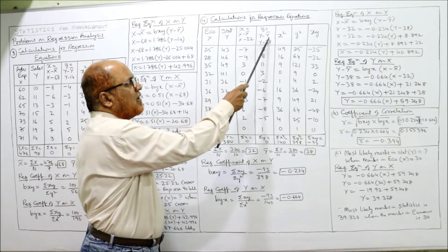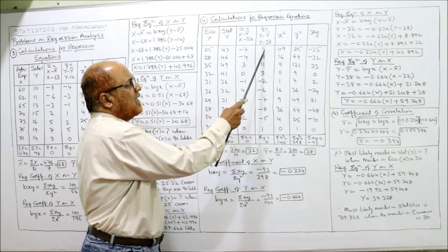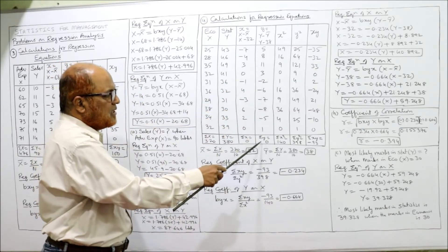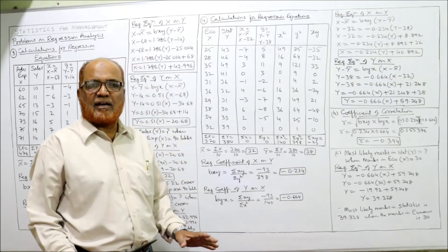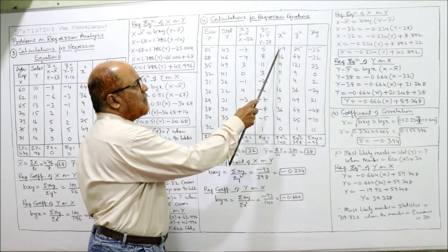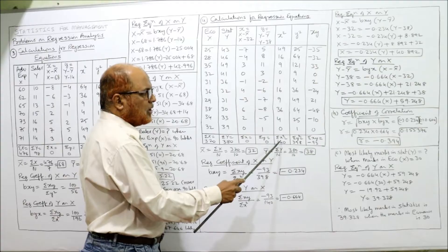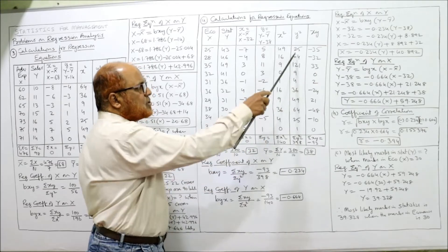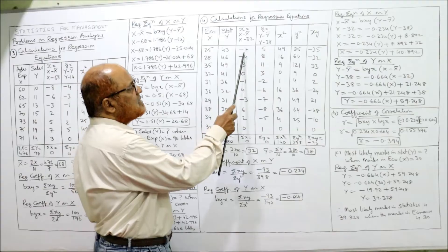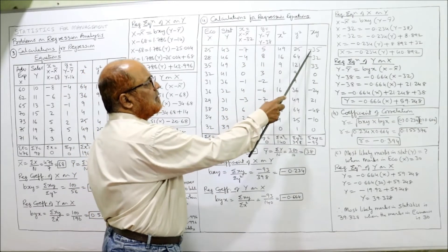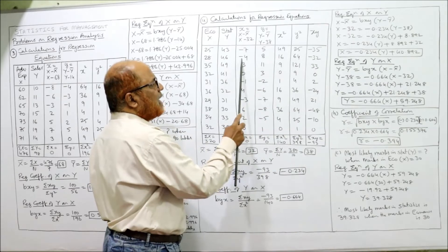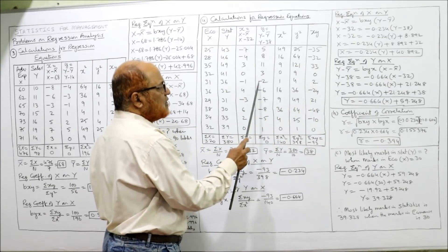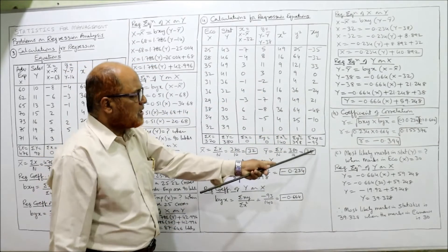Similarly, small y equals Y minus Y bar where Y bar is 38: 43 minus 38 is 5; 46 minus 38 is 8; 49 minus 38 is 11, and so on. Summation y must also equal 0. Now x squared: 7 squared is 49, 4 squared is 16, 3 squared is 9, 0 squared is 0; total summation x squared is 140. For y squared: 5 squared is 25, 8 squared is 64, 11 squared is 121, 3 squared is 9; total summation y squared is 398. For x times y, calculating each product — noting sign rules — total summation xy equals minus 93.